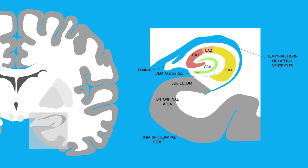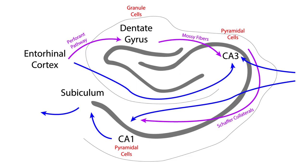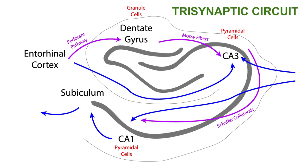CA1 to CA4 are subfields of the hippocampus proper. CA stands for Cornu Ammonis. And now we come to the trisynaptic circuit, which describes the pathways of communication between the structures of the hippocampus we've just discussed. It is called the trisynaptic circuit because it includes three major cell groups: granule cells of the dentate gyrus, pyramidal neurons of CA3, and pyramidal neurons of CA1.